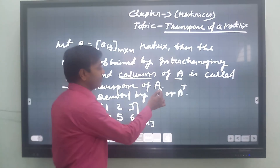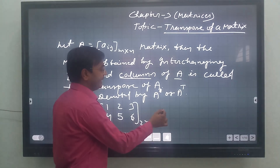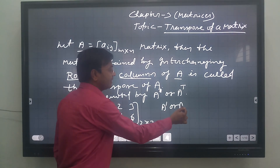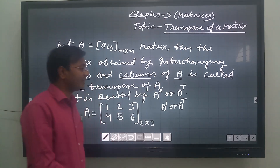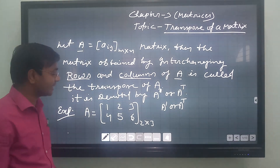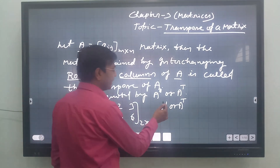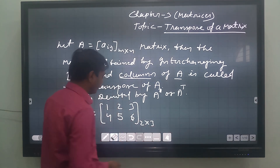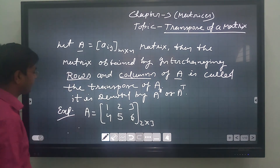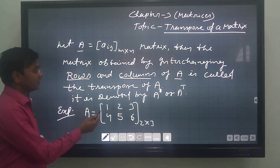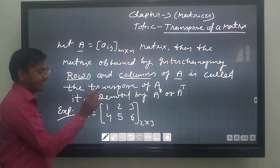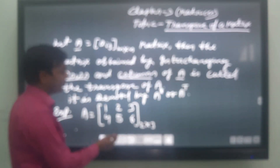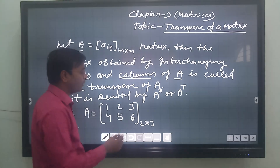We can use any notation — A dash or A to the power T, that is A transpose. Let us consider one example. Let us take a matrix A: 1, 2, 3, 4, 5, 6 — any matrix of order 2×3.